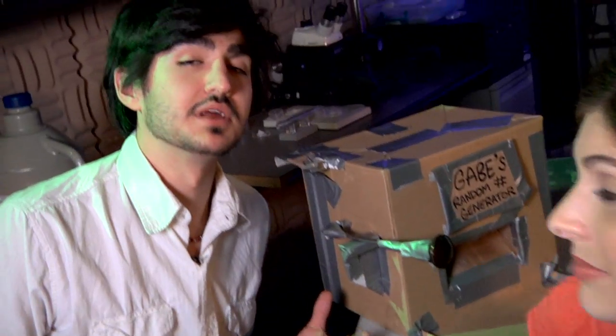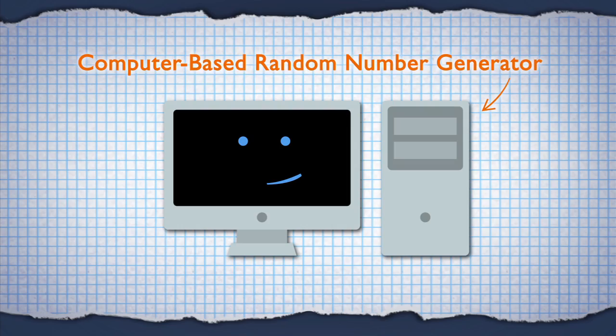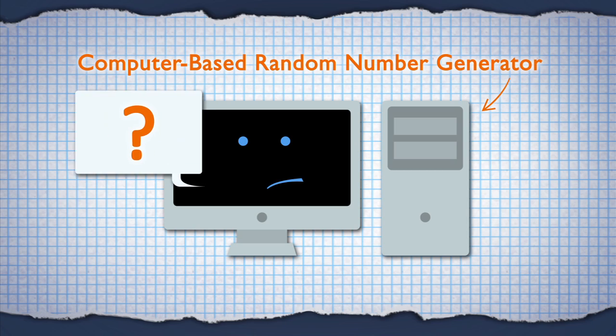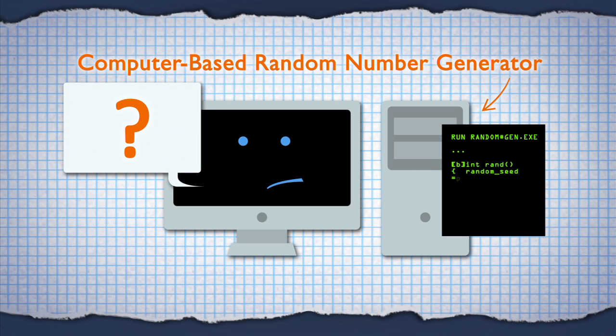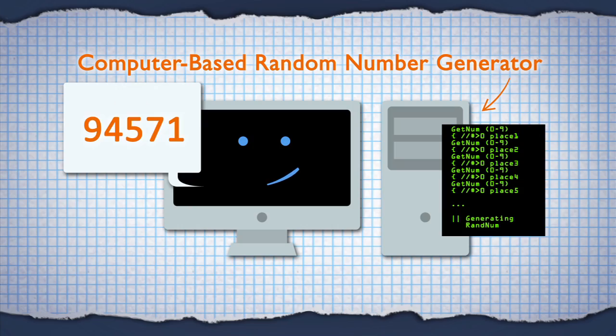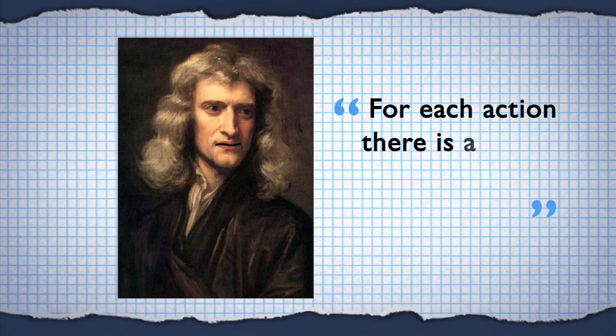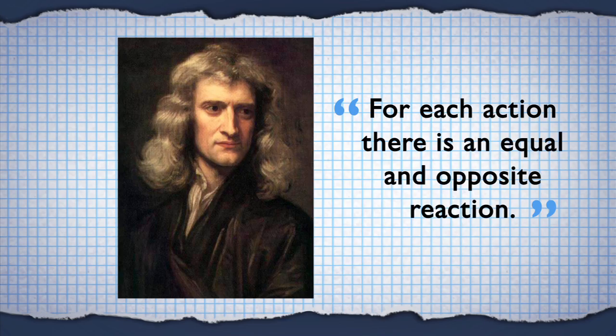Since not everyone can create a random number generator themselves, they typically use computers to create random numbers. The problem is, computers are deterministic. Software can't generate true randomness because it relies on inputted code. There exist random number generators based on classical physics, but they're not based on a fundamentally random process, as classical physics is also deterministic. You know that whole "for each action there's an equal and opposite reaction" thing? It's one of the foundations of classical physics, and it means that your results are based on the input.